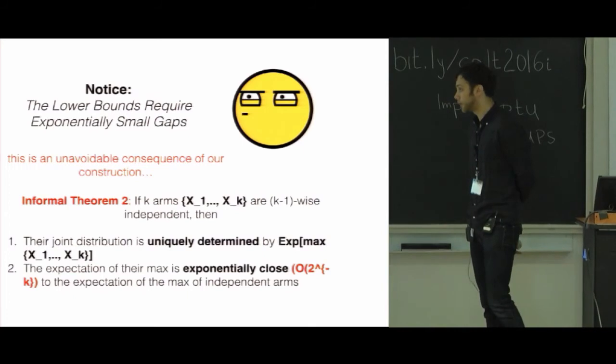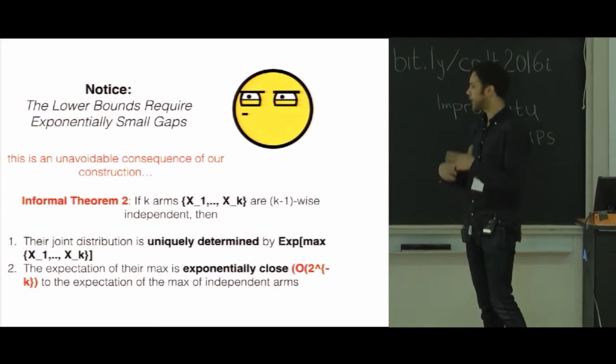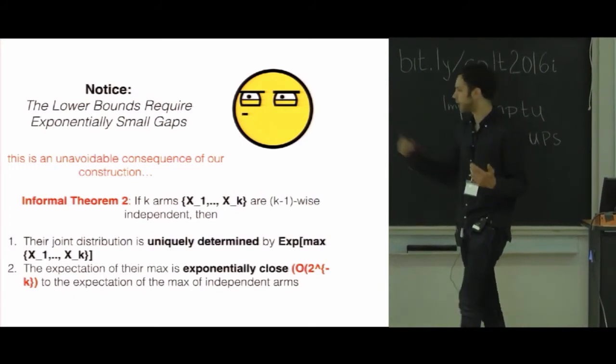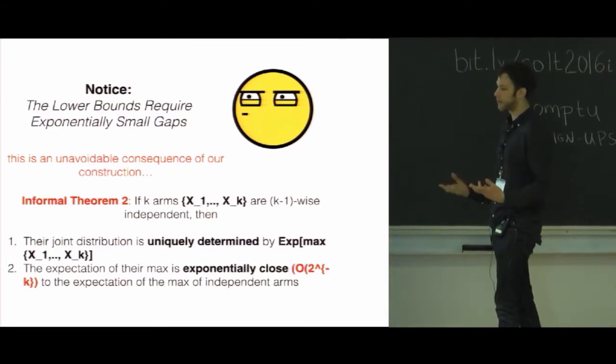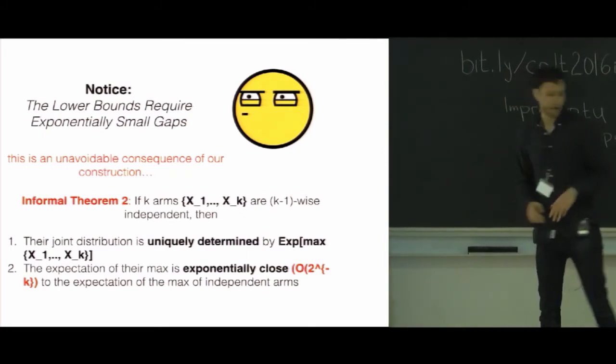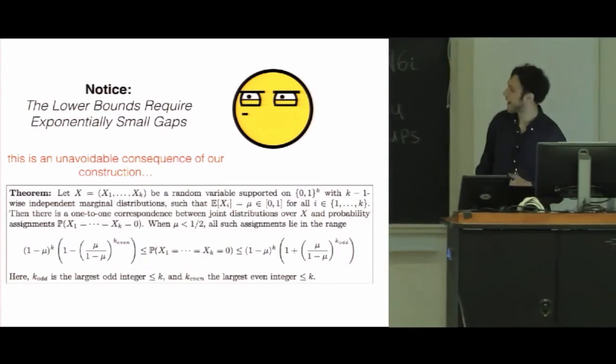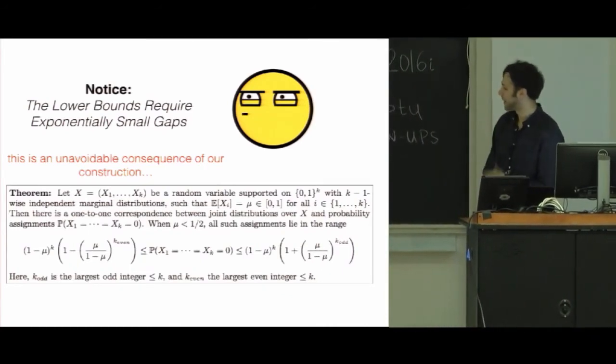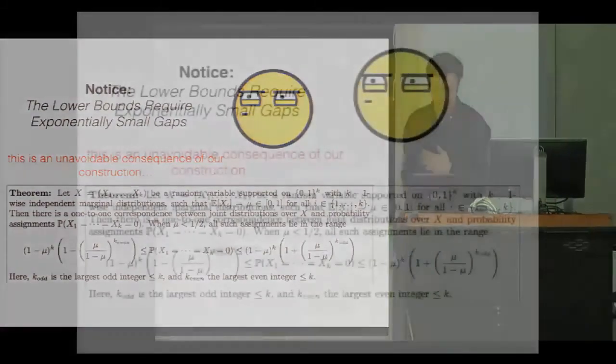And the proof is kind of technical. It relies on representing distributions as a linear program. And we try to optimize this. And you can exploit a lot of symmetry in the LP. And you find out this is sort of what the actual theorem looks like. I don't have enough time to go through it. But you get a really absolutely tight characterization of what this kind of construction can provide.